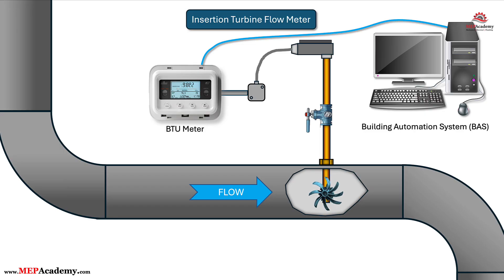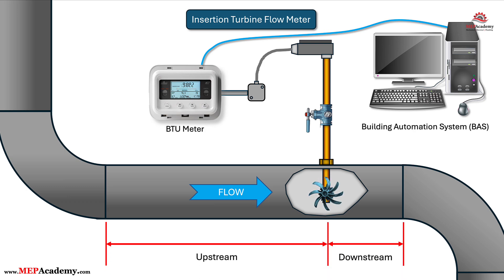These meters are more commonly specified for HVAC projects for their ease of installation and lower price. With the use of a hot tap, some of these flow meters can be installed into a pressurized and actively flowing pipe. The insertion turbine meter will require additional upstream and downstream straight pipe lengths than those required for the inline magnetic flow meter. There will be a low pressure drop caused by the turbine wheel, and since they have moving parts, maintenance will be greater in addition to the time between recalibrations.